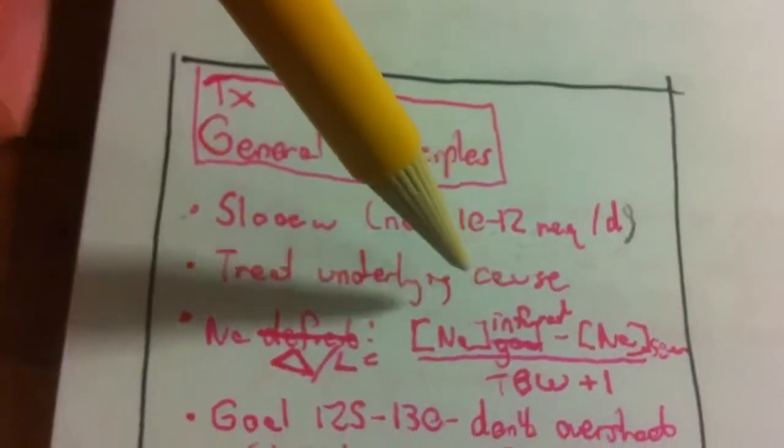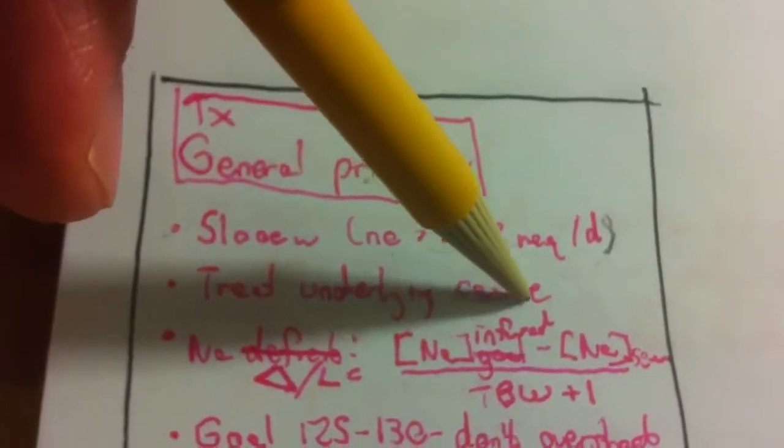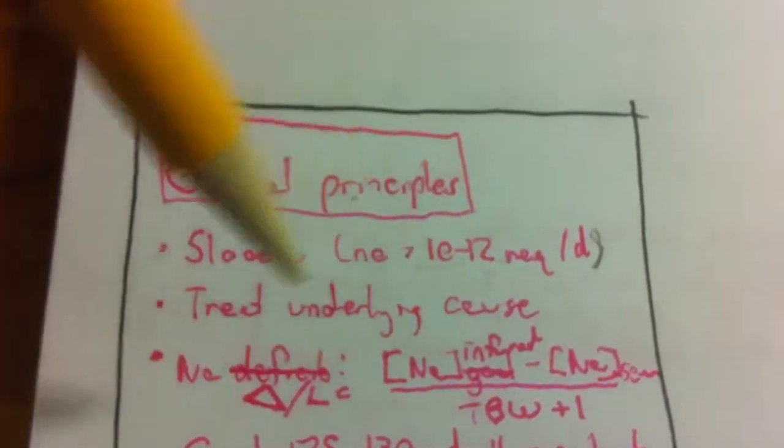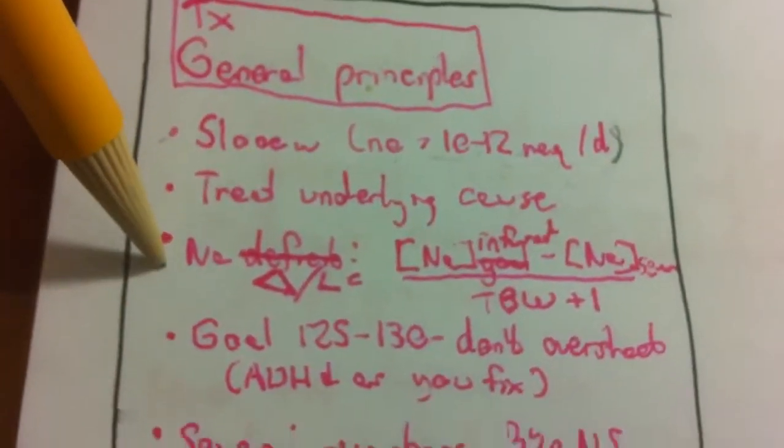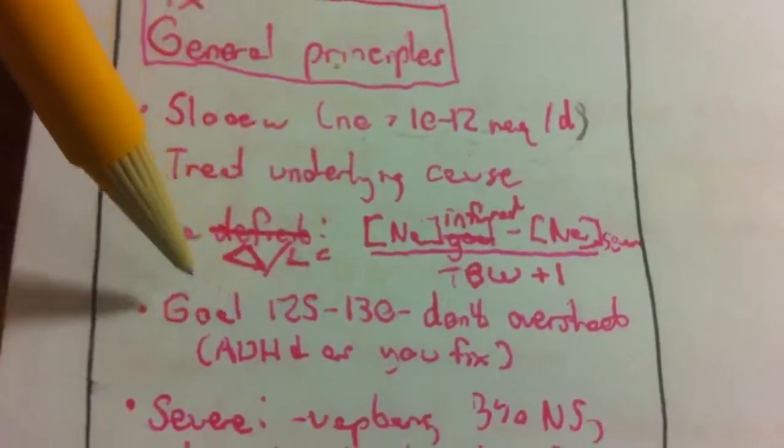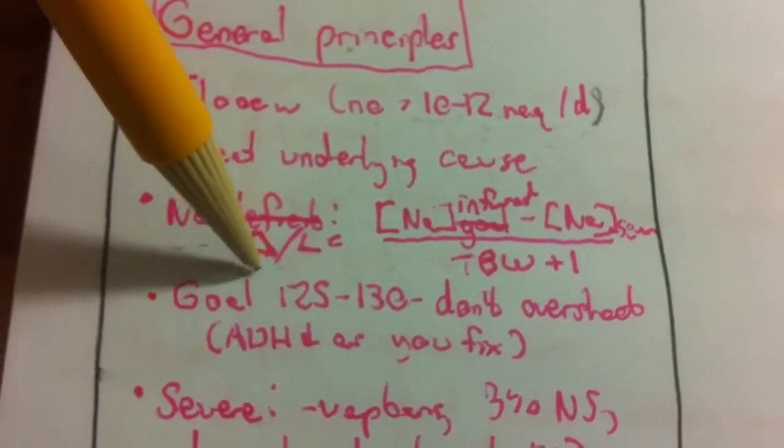Treat the underlying cause. Give them fluids if they're dehydrated, treat their heart failure, treat their liver failure, give them dialysis if they're in renal failure, et cetera. And then, I don't know about the sodium chain.